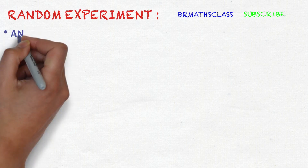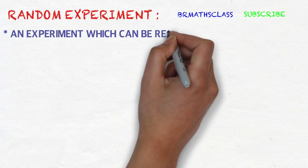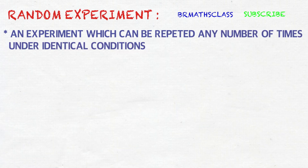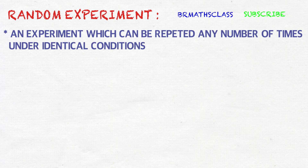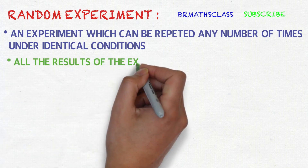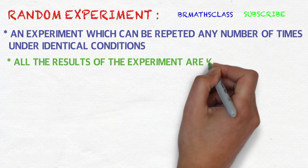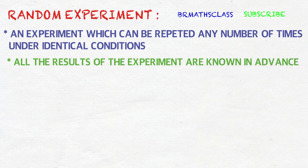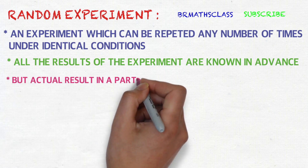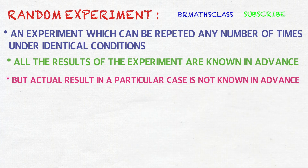An experiment which can be repeated any number of times under identical conditions — that is the first condition. Second, all the results of the experiment are known in advance. Third, but the actual result in a particular case is not known in advance.